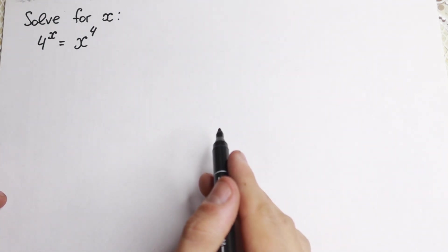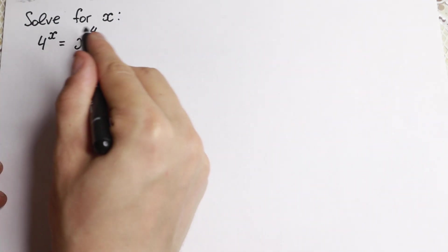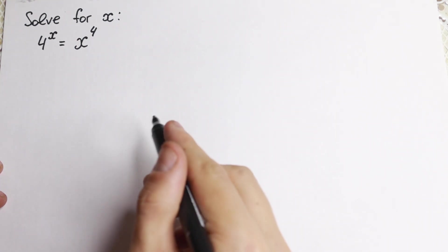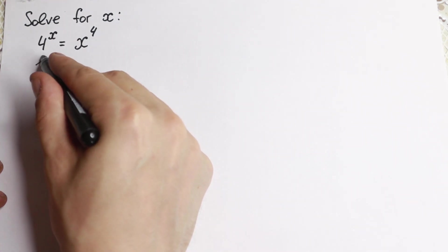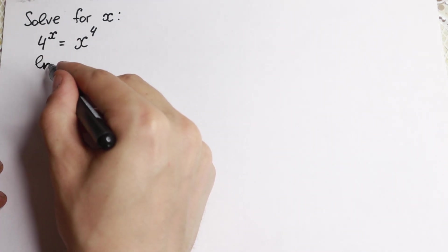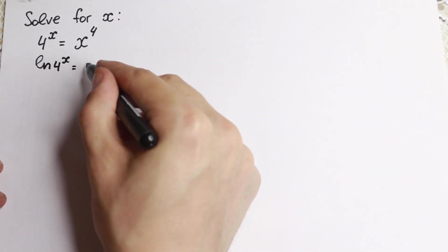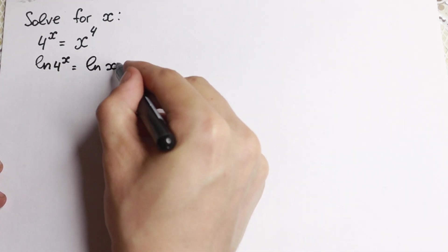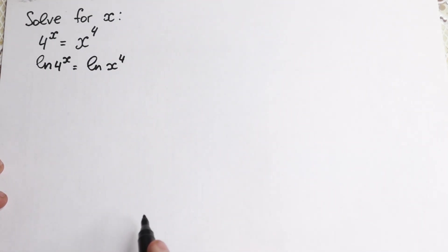But how can we start to solve this? First of all, we have a power and we have an exponent, so it's really good to take the log on both sides. Let's do this. If we take the natural log on the left-hand side of 4 to the x, equal to the natural log of x to the fourth power — we're just taking natural log on both sides, so nothing changed for us.